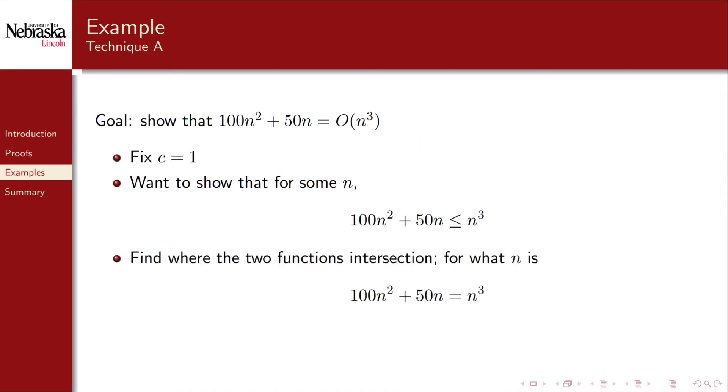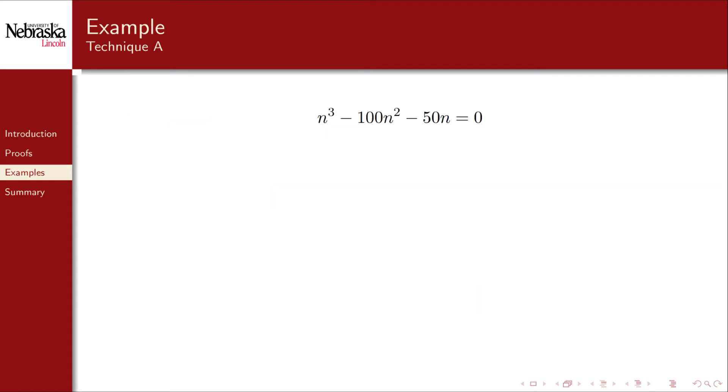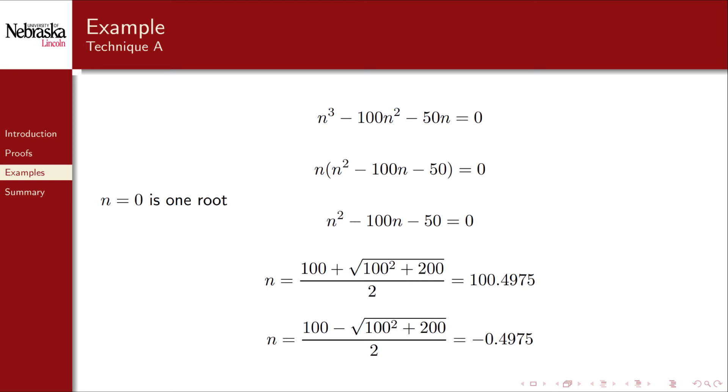We essentially want to find where the two functions intersect, that is, where they're equal. We can collect terms onto one side, which means we're searching for the roots of this polynomial. We can factor out a common term, and so 0 is one of the roots, but it's not the largest root. That leaves us with a quadratic equation, which allows us to use the quadratic formula to find the two other roots.